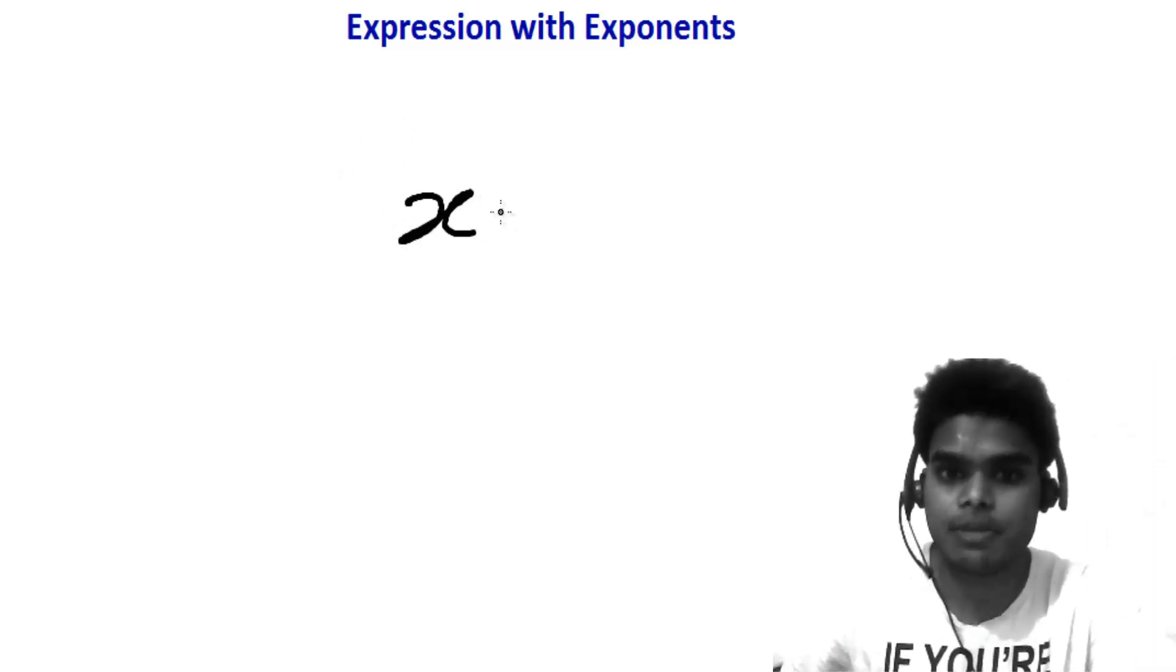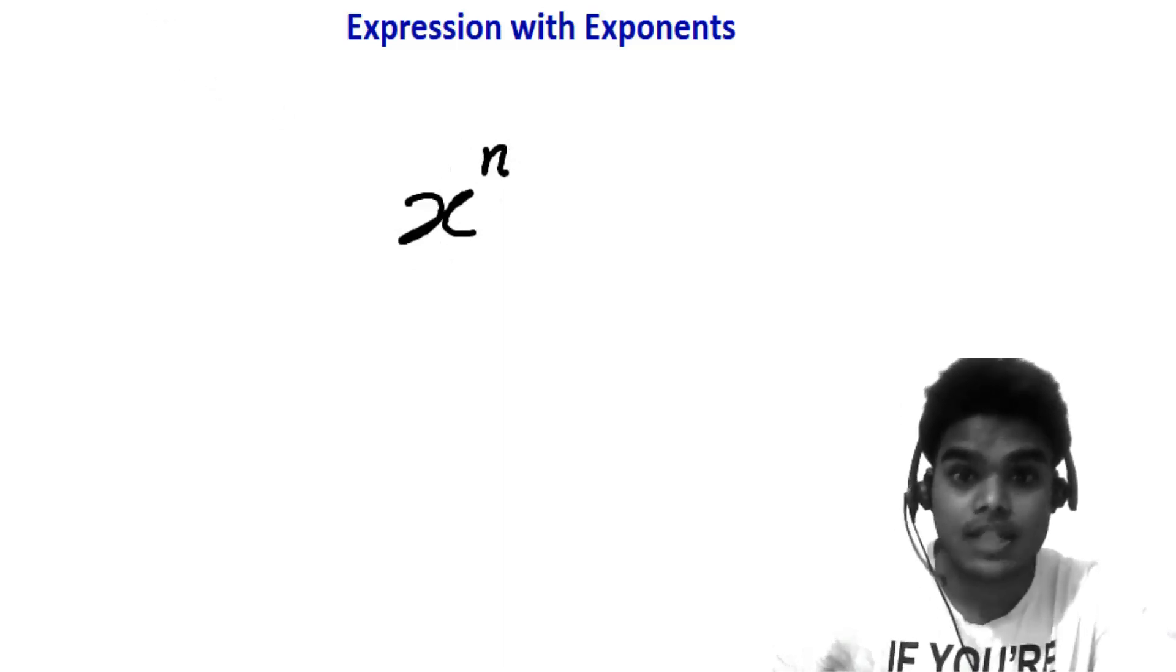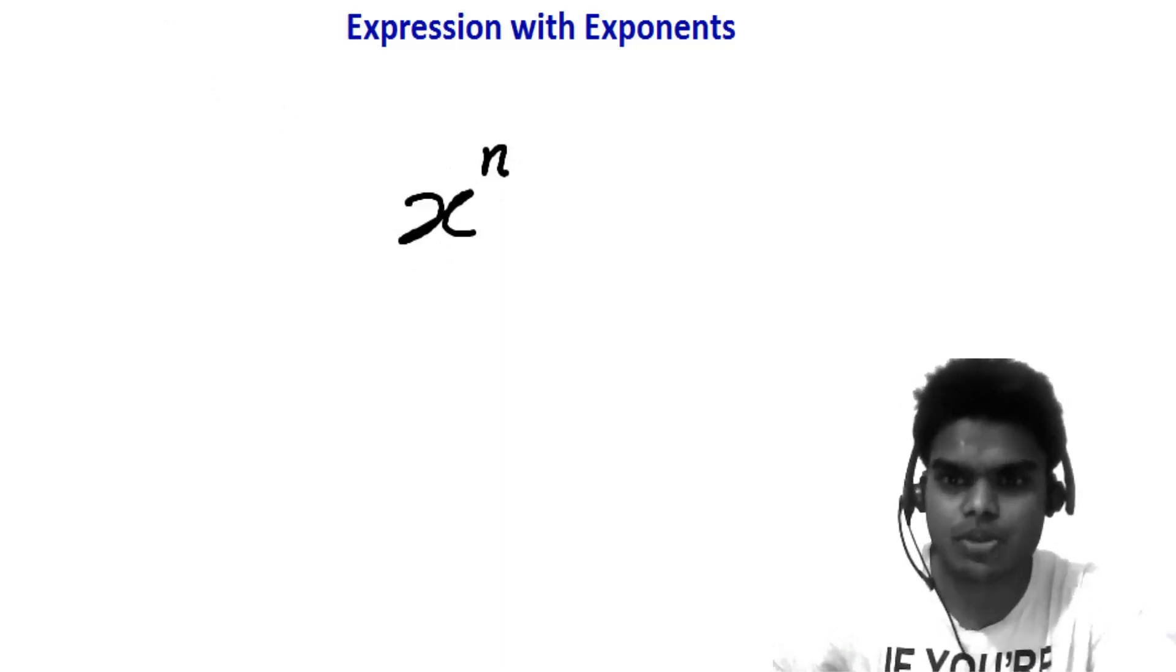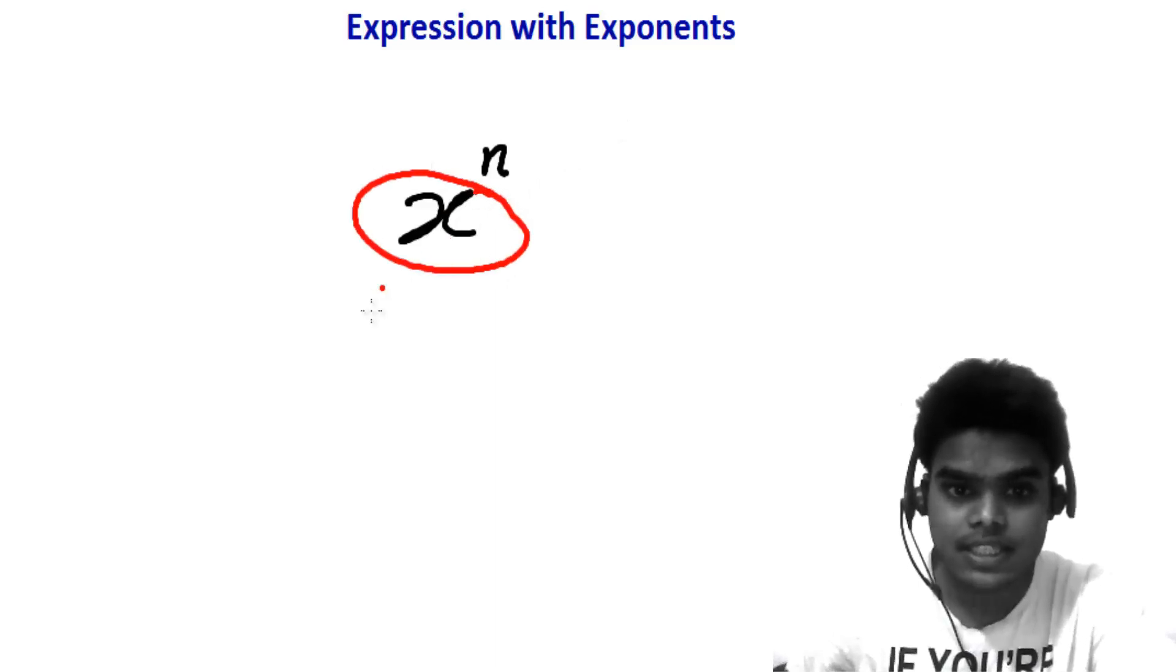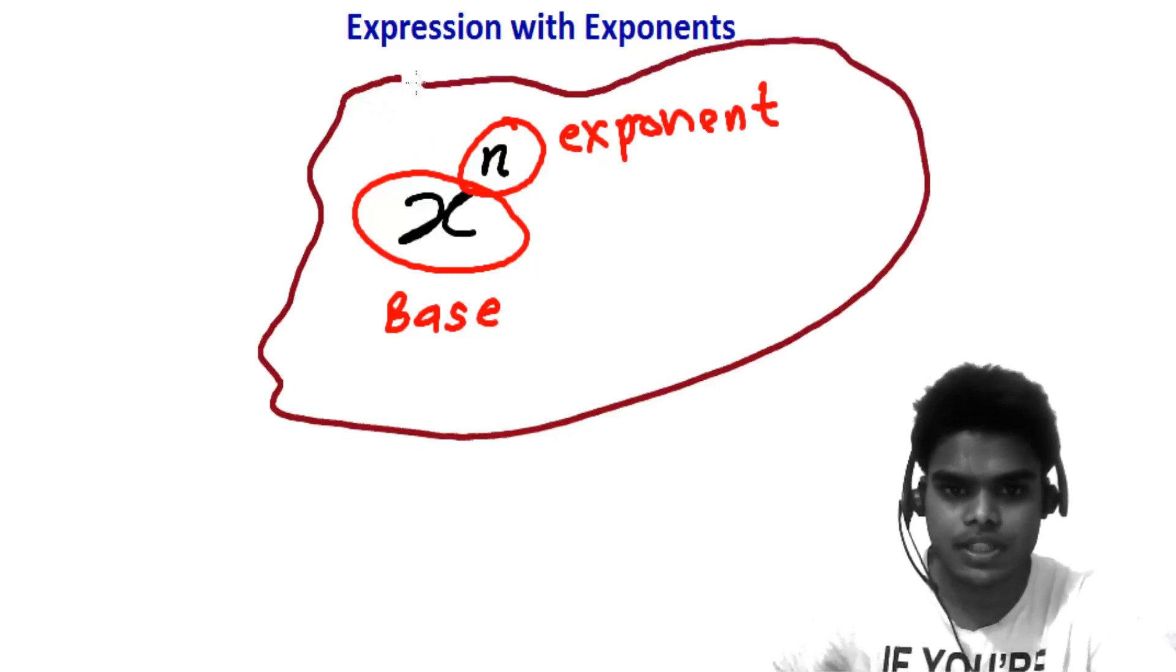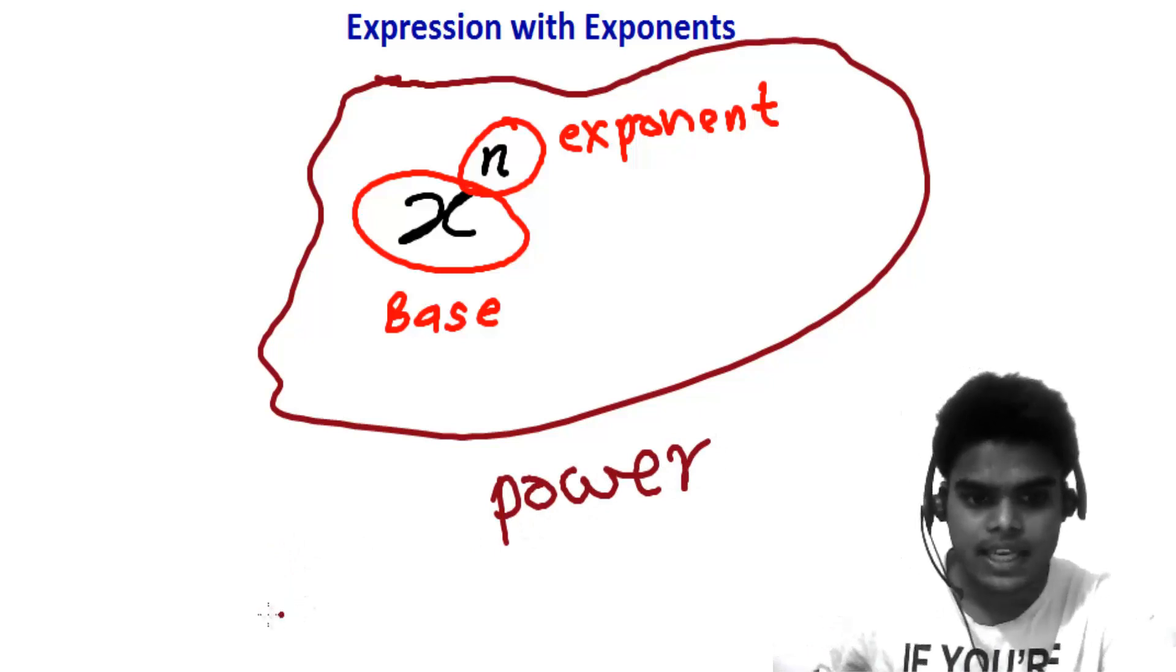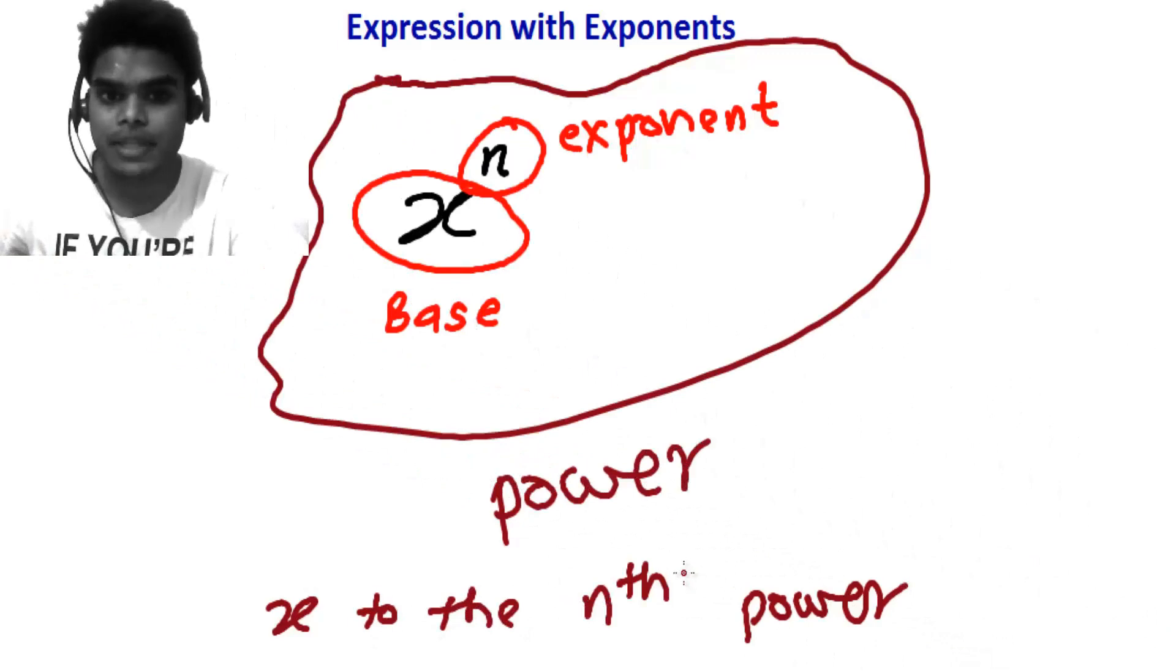Let's say x is a variable which has been raised to the power of n, x to the nth power. Let me go through the terms and terminologies. This x is called base and this n is called exponent and this whole expression is called power. And it is raised as x to the nth power. Remember that.